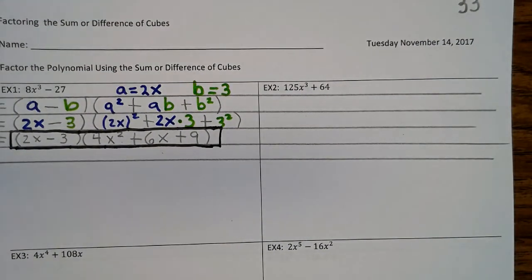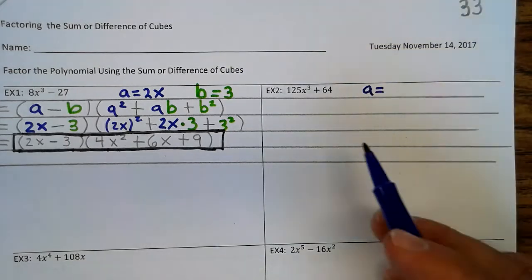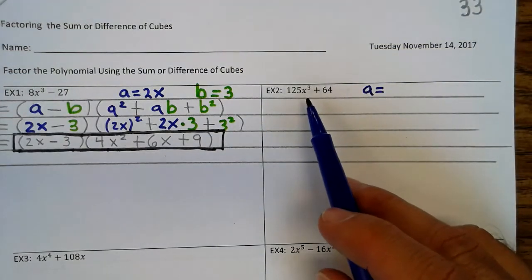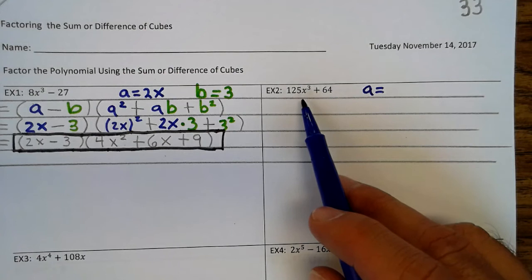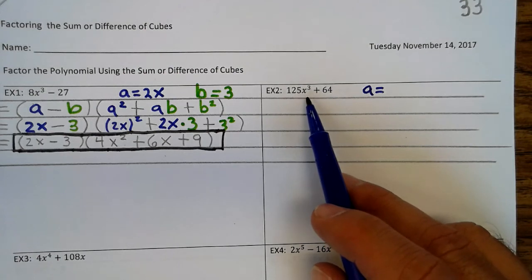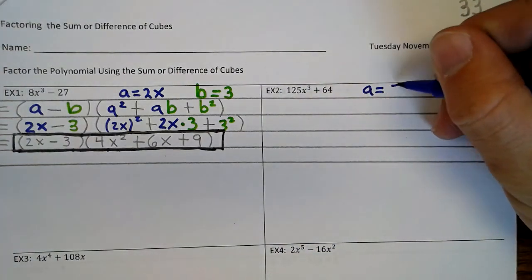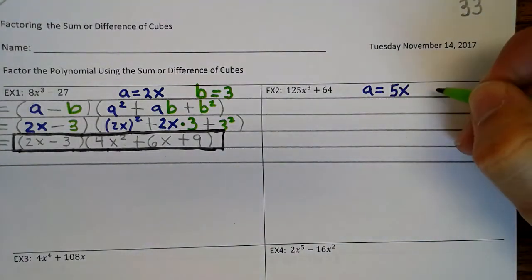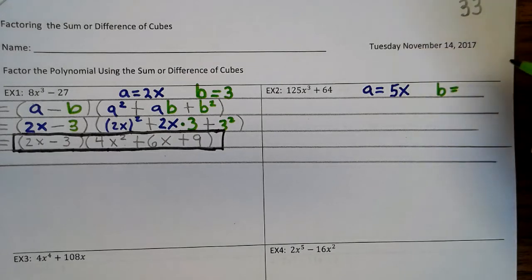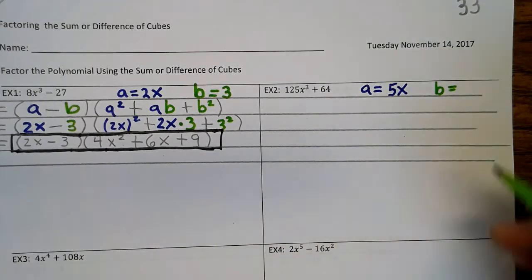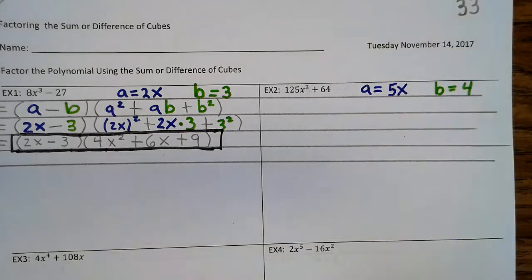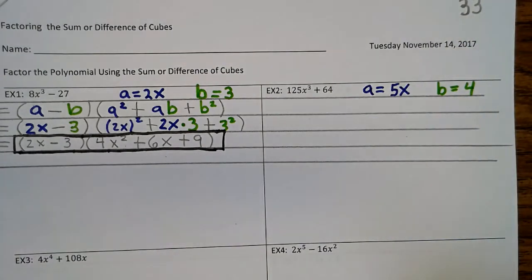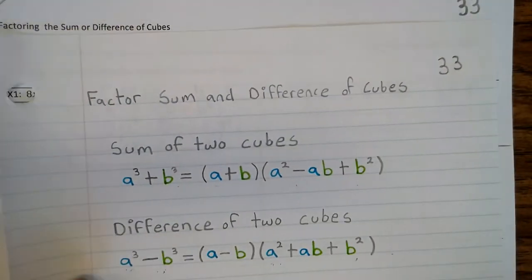So it looks like we have the sum of two cubes, so we have to figure out what A and B are. So A — well, 5 cubed is 125, and x cubed is x cubed. So we know A is 5x. And then B — well, what cubed is 64? And that's 4. So we're using the sum of two cubes.